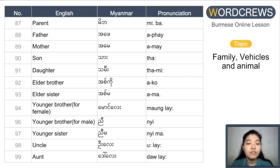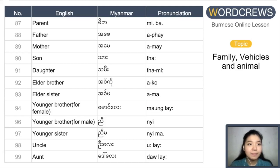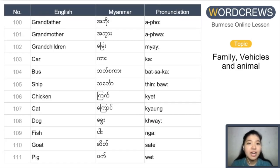Younger brother for female: mao le. Younger brother for male: ni. Younger sister: ni ma. Uncle: u le. Aunt: do le. Grandfather: a po. Grandmother: a po. Grandchildren: ni.